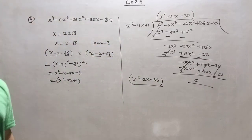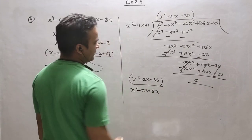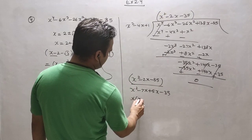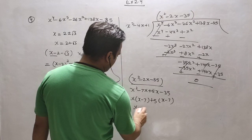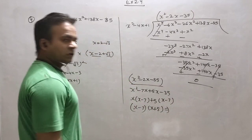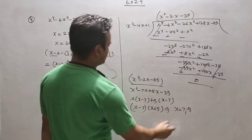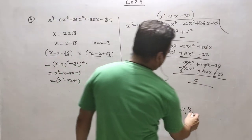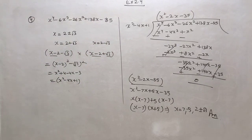x squared minus 2x minus 35 contains the other two factors. Middle term splitting: 7 and 5 will be factors, so it is (x minus 7)(x plus 5). Writing in root form: x equals 7 and x equals minus 5. The other two factors are 2 plus or minus root 3. I hope this question was easier than the previous one.